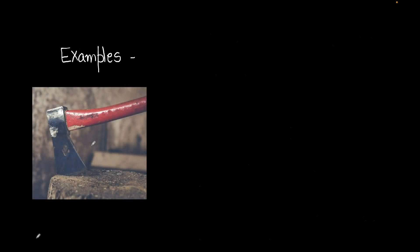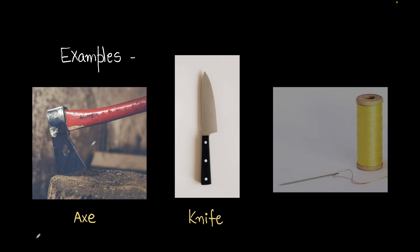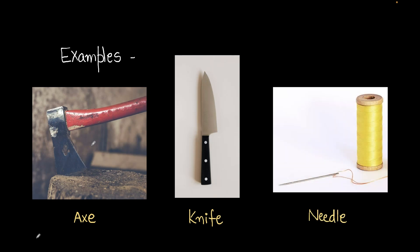Let's look at a few examples of wedges. The first classic example is an axe, where a wedge is used to break wood into two pieces. Another example you see at home every day is a knife — yes, that's a wedge. Other examples include needles, which are also wedges of sorts. That's it for this video.